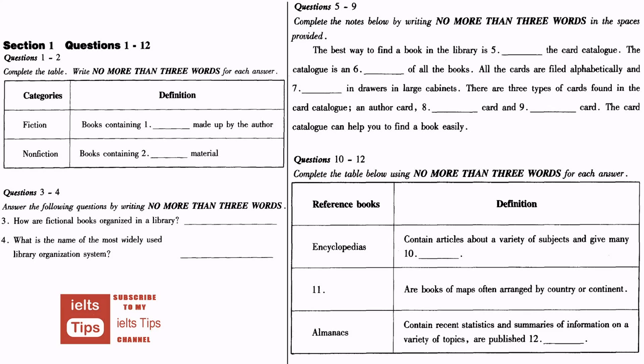All libraries are organised in much the same way. Every library houses a collection of books. Many libraries also have periodicals, films and records. All the books in a library can be classified under two main categories, fiction and non-fiction.